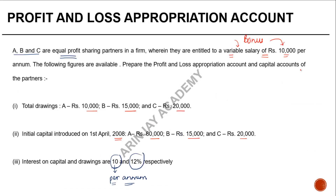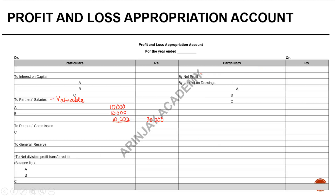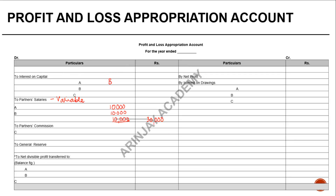Interest on capital is at 10%. Since capital is $80,000 for A, interest is $8,000. For B at 10% of $15,000, interest is $1,500. For C at 10% of $20,000, interest is $2,000. The total interest on capital — $8,000, $1,500, and $2,000 — comes to $11,500, which is entered in the profit and loss appropriation account and credited to each partner's capital account.